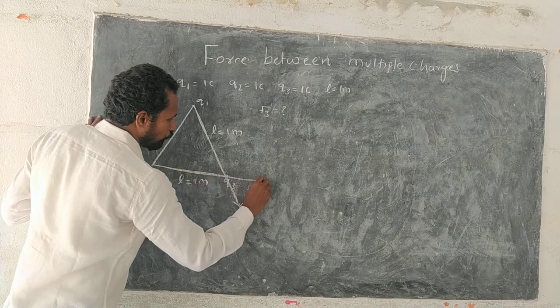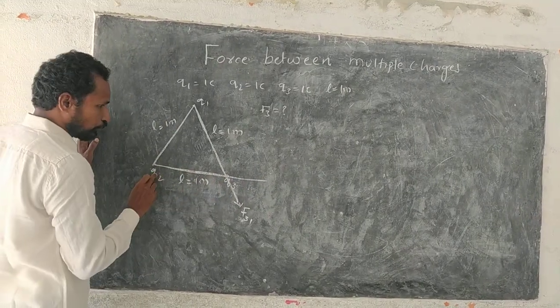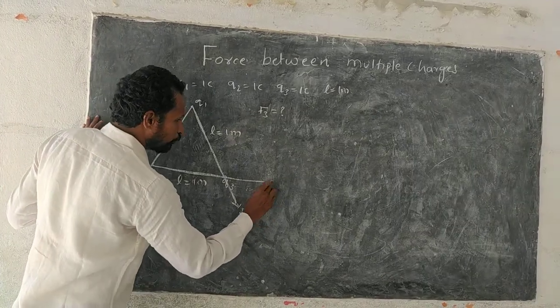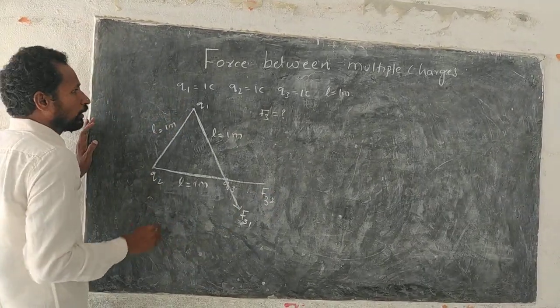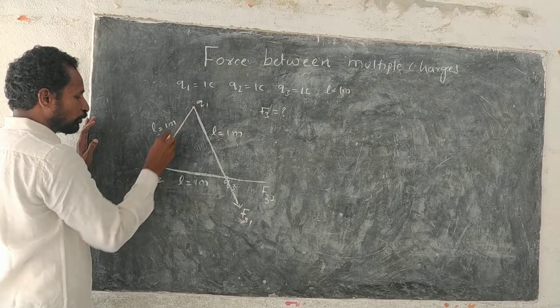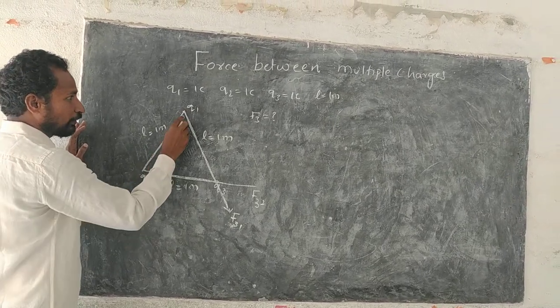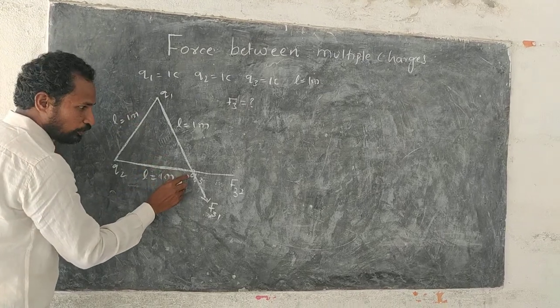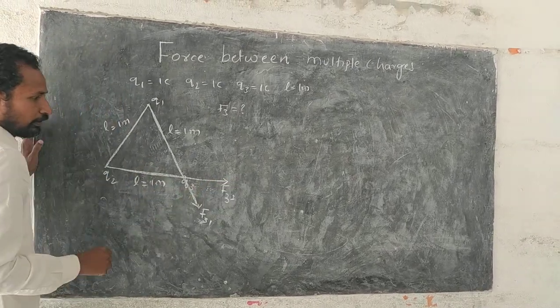and force on Q3 due to Q2, we will write F32. Now, we do not take force between Q1 and Q2, because they did not ask force between Q1 and Q2, they asked only force on Q3.